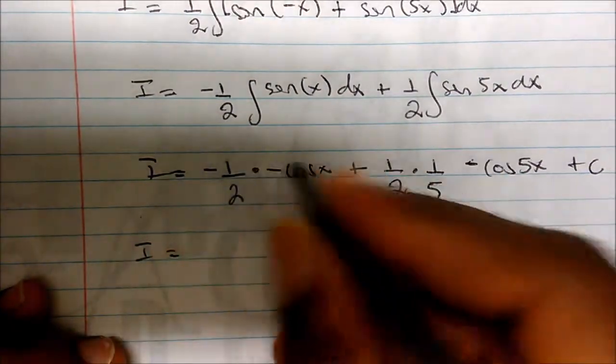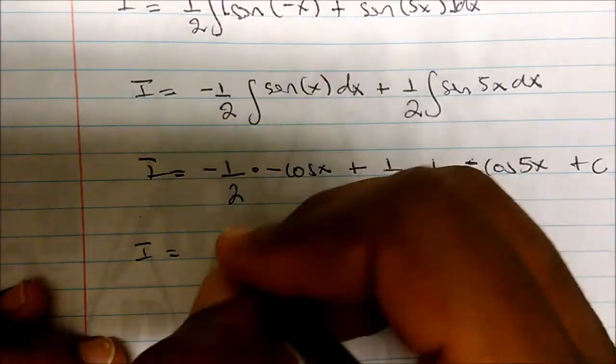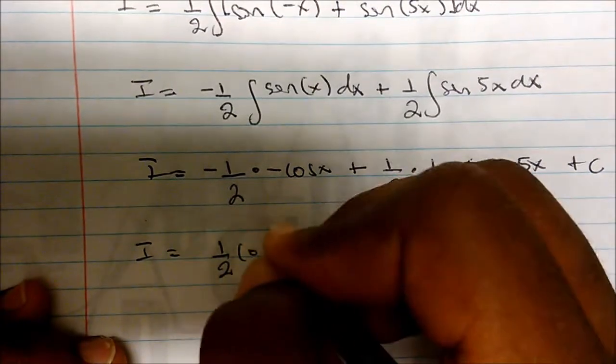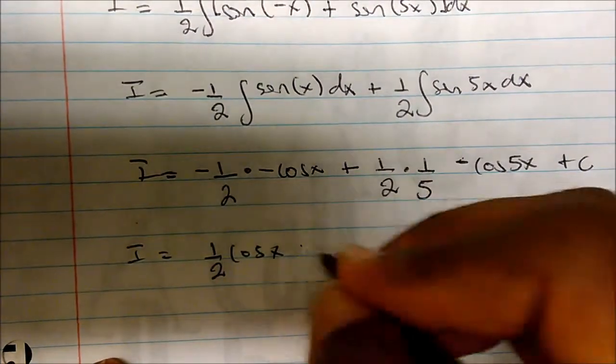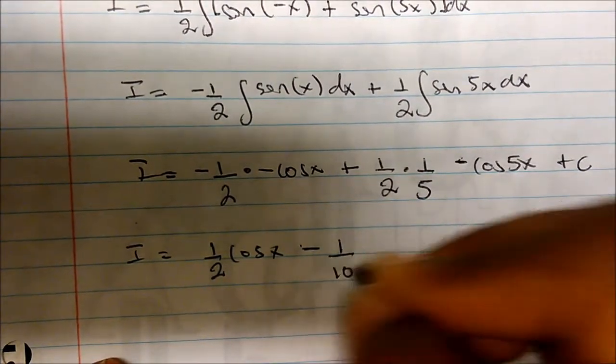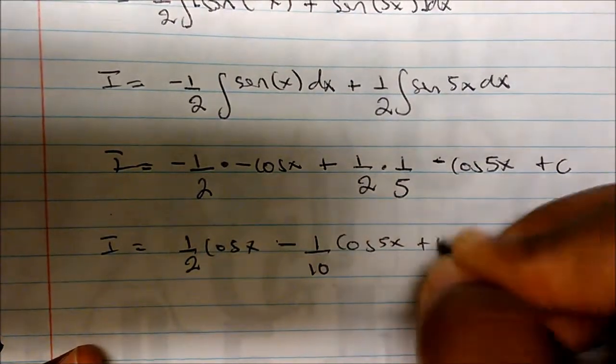And so if we clean this up a little bit, the integral is given by - well, negative times a negative is a positive, this becomes one half cosine of x, minus one over ten cosine five x plus c.